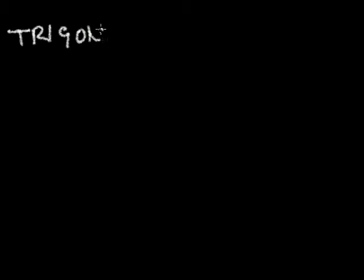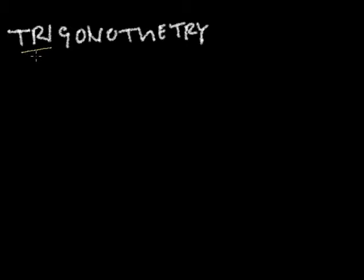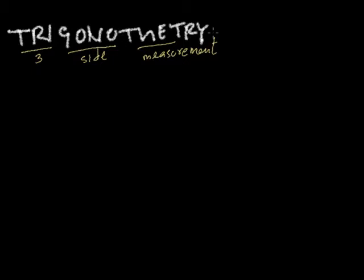What is trigonometry? Trigonometry, as most people know it, is the study of triangles. The word breaks down as 'tri' meaning three, 'gon' meaning corner or side, and 'metry' meaning measurement. So whenever we hear the word trigonometry, we are talking about triangles.